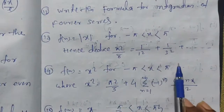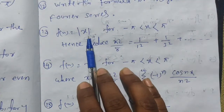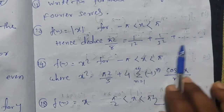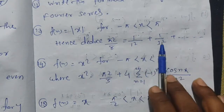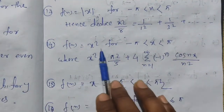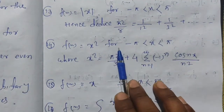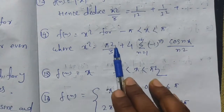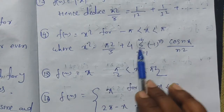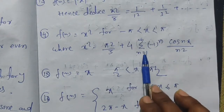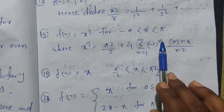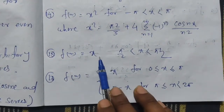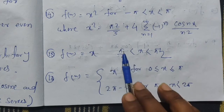Now the long questions. f(x) = |x|, range minus pi to pi — prove it. Next, f(x) = x², range minus pi to pi: x² = π²/3 + 4 × summation from n=1 to infinity of (−1)^n × cos(nx) / n².